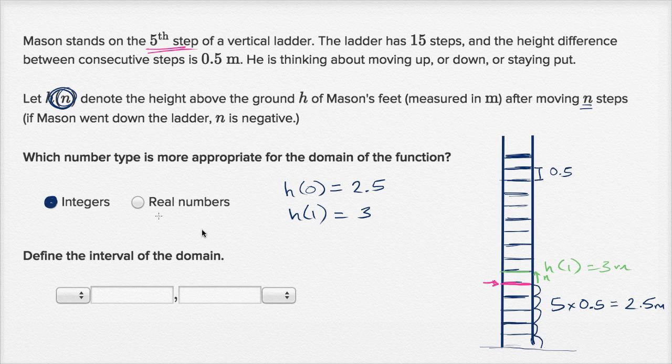This function right over here, the valid inputs, I want to be able to input an integer. In fact, it's not even all integers, because he can't go down an arbitrary amount. In fact, he can't go up an arbitrary amount either. But the domain is going to be a subset of integers.